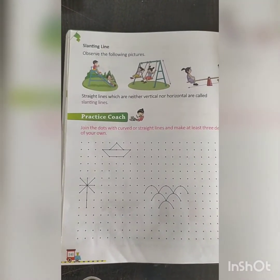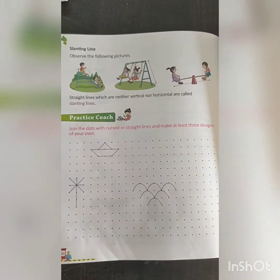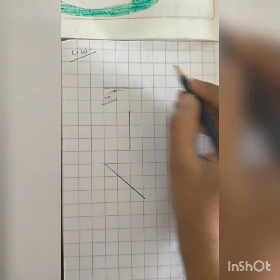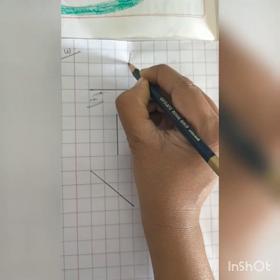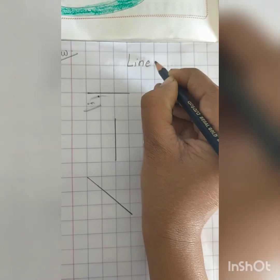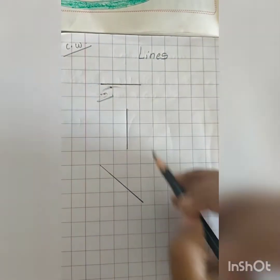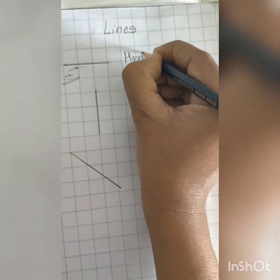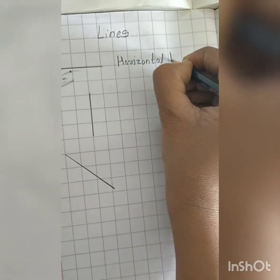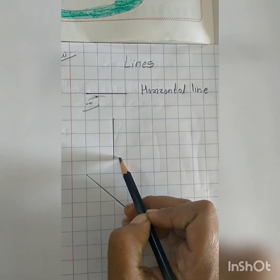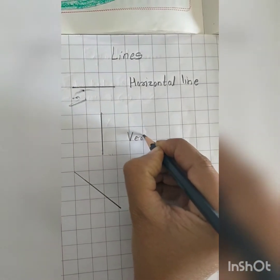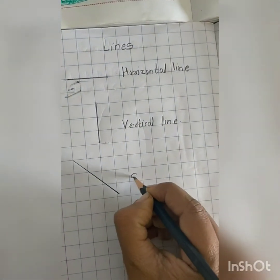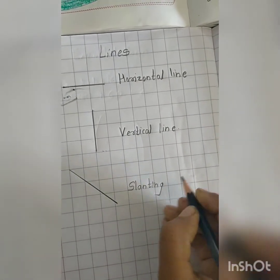अब हम क्या करेंगे? हमारे notebook में all lines निकालते हैं. So students, आपको Maths की notebook लेनी है. First, you have to write classwork, then date, and you have to write topic name: Lines. हमने यहाँ पे lines निकालनी हैं. First line: यह कौन सी है? Horizontal line. Then which line is this? This is vertical line. This is slanting line.